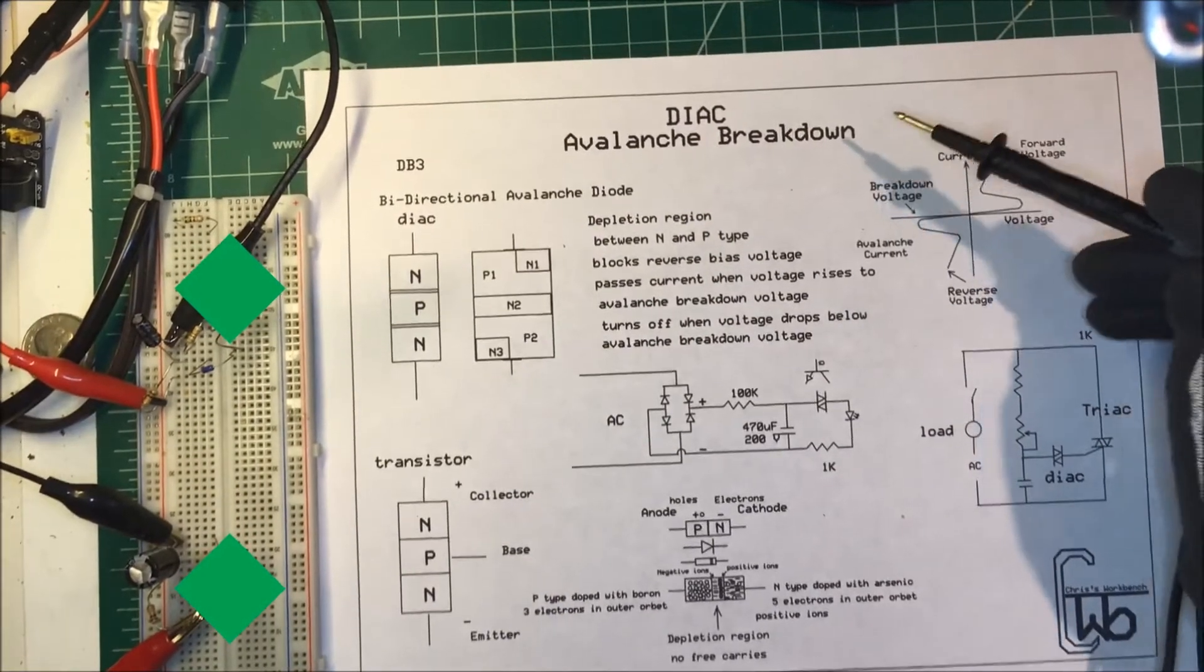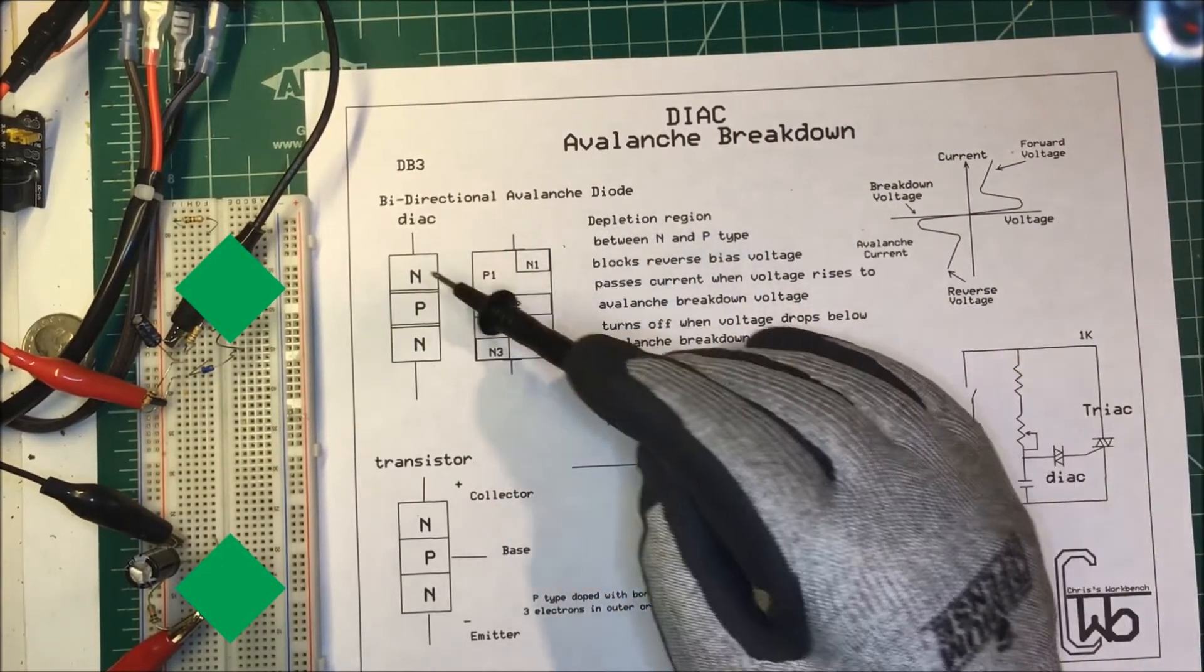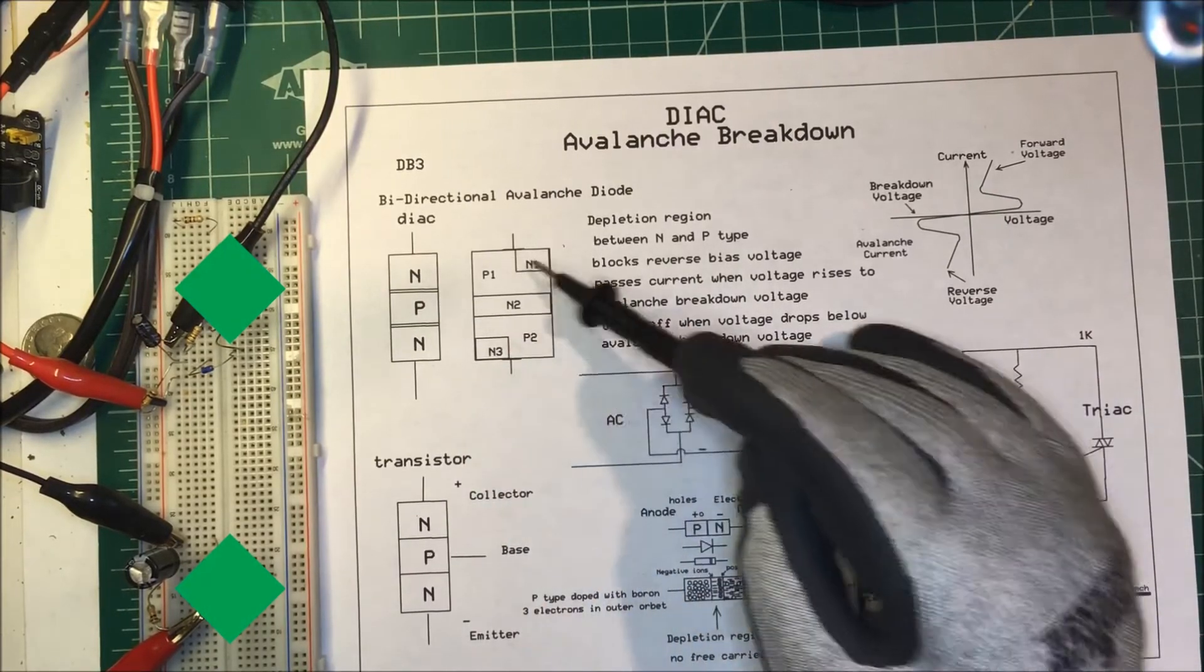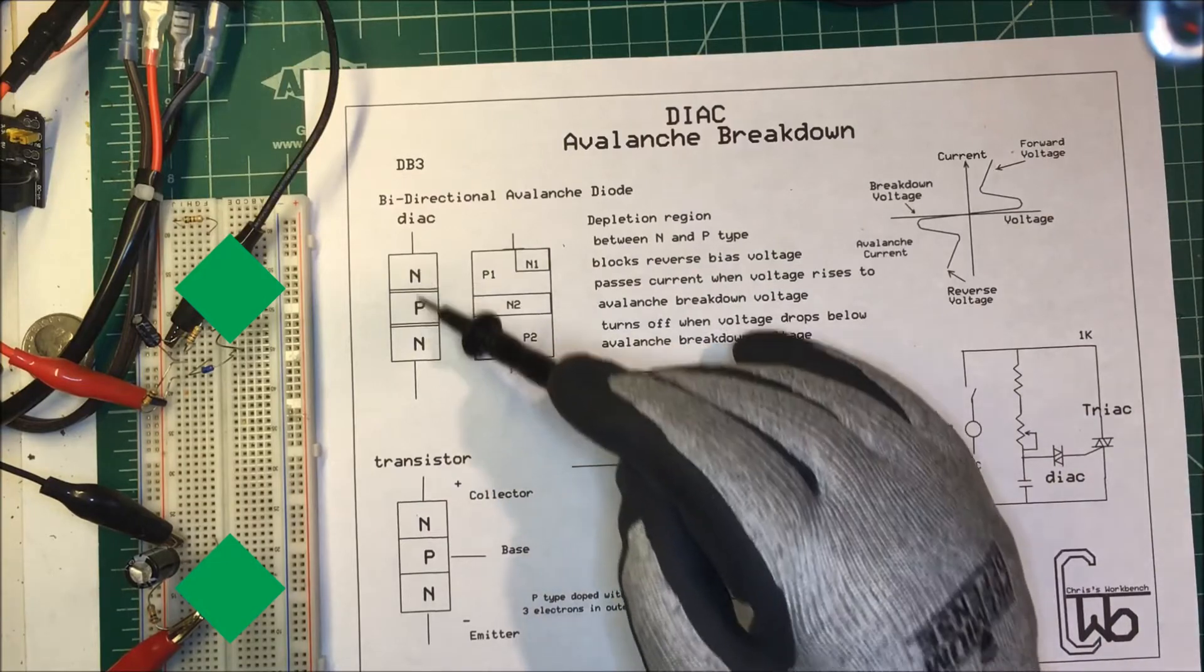Let's talk about the avalanche breakdown of a DIAC. Now a DIAC is a bidirectional avalanche diode. Some of them are configured like this with an NPN junction and something like this. They have five layers in them.